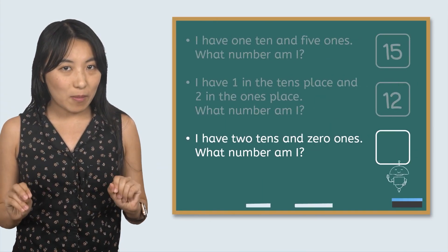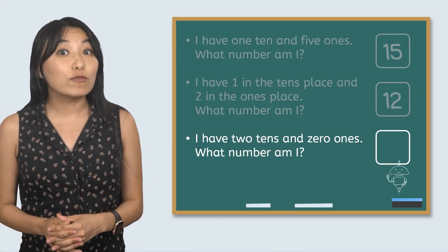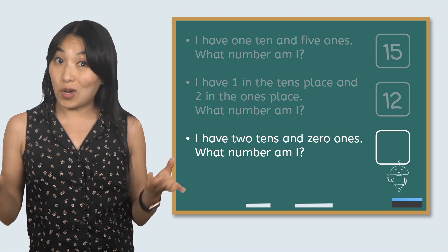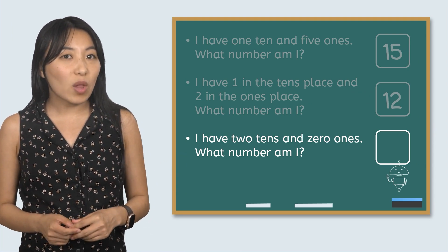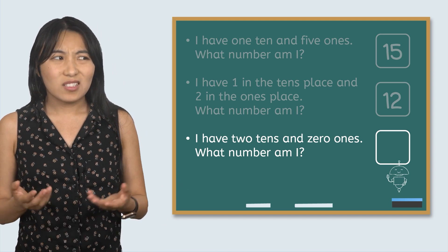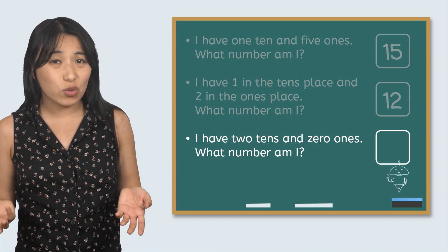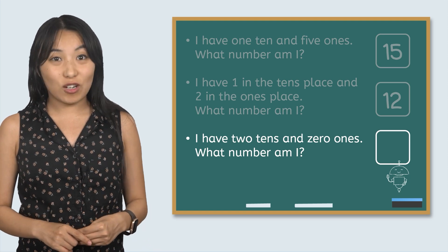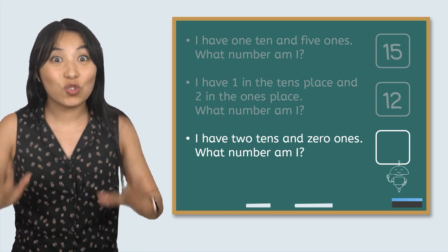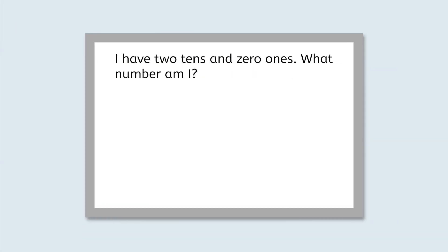The final mystery number says, I have two tens and zero ones. What number am I? We could use our base ten blocks to solve this, but we don't always have our math tools with us. So, it is helpful to have other strategies in our toolbox like drawing. I know I can draw a line to represent a ten block and a small square to represent a one block.